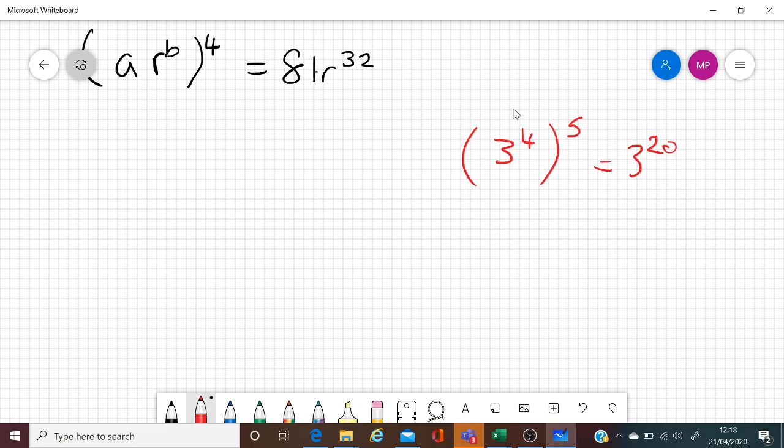So the same way, this over here would then give you R to the power of B times 4, which is 4B. Now that has to match up with R to the power of 32, which means that 4B is the same as 32, which means B is obviously going to be 32 divided by 4, which is 8. So you know now that B is 8.